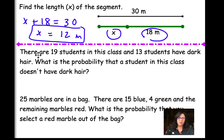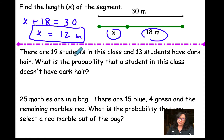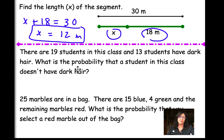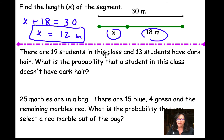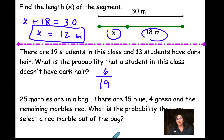For the next question, there are 19 students in this class. 13 students have dark hair, which means 6 students have light hair. What is the probability that a student in this class doesn't have dark hair? If they don't have dark hair, and there are 19 students total, the students who don't have dark hair is 6. So you would say 6 out of 19.